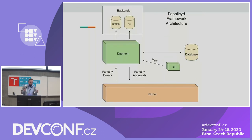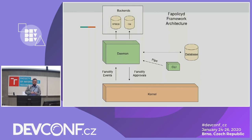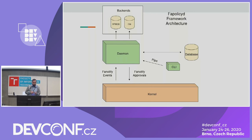FAPOLICYD framework can be divided into a few parts. The most significant one is the daemon. When the daemon starts, it loads all backends and their data and stores them into its internal database. Then it waits for FANotify events. When such an event occurs, it looks up the matching rule and checks whether the content of that event is trusted or not — constructing a query against the database to determine trust.